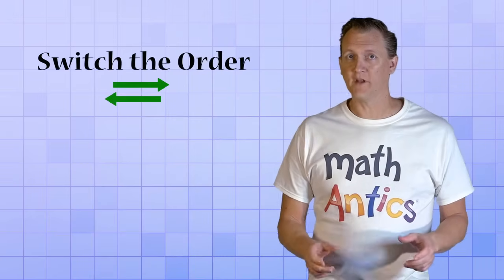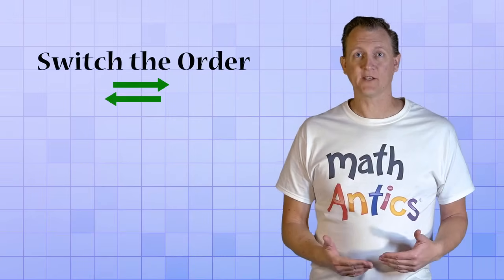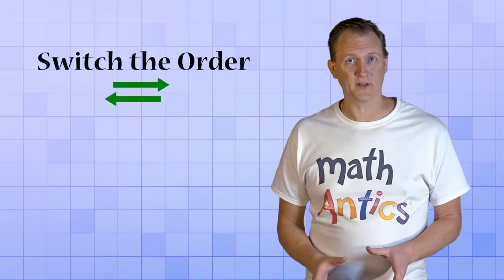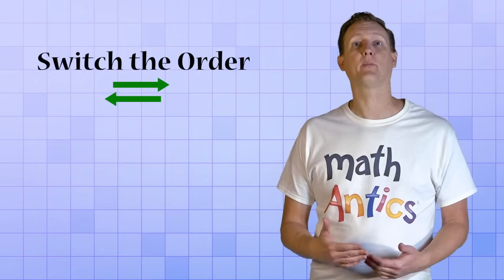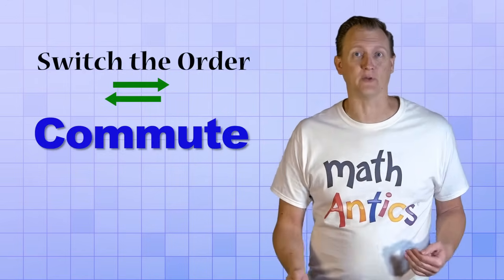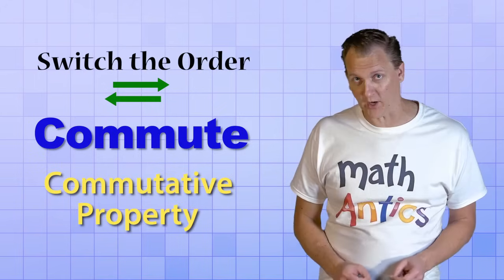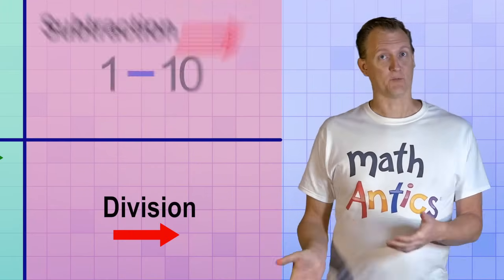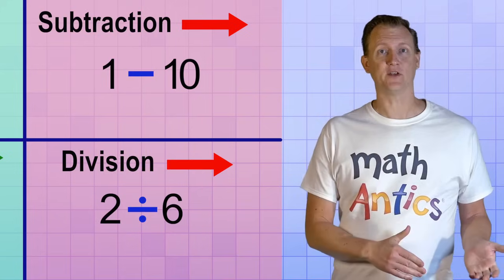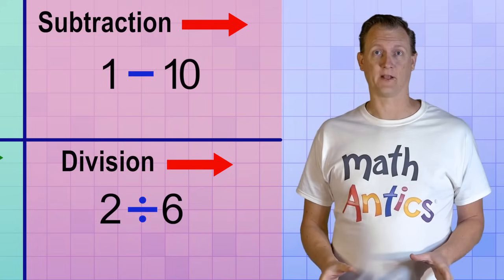When you can switch the order of the numbers in operations like that and still get the same answer, the technical math term is to say that the operations commute, or that they have the commutative property. On the other hand, subtraction and division don't have the commutative property. If you switch the order of the numbers, it's not the same problem and you'll get a different answer.